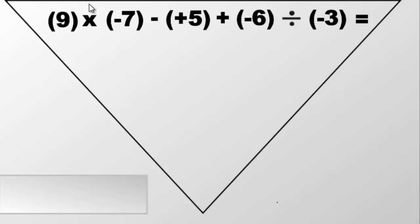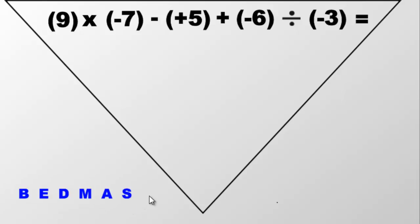I've drawn a triangle here because it's going to help guide us towards the answer. We've got all of these numbers put together and we're going to have to figure out what the answer is. You probably remember BEDMAS — Brackets, Exponents, Division, Multiplication, Addition, Subtraction. That's the order we have to go in, from the B all the way down in that order.